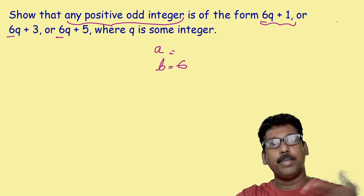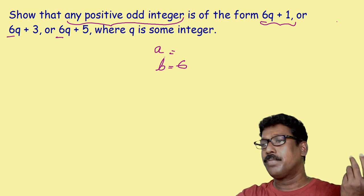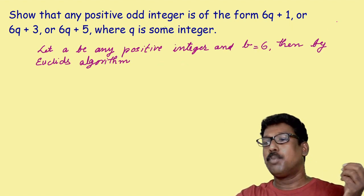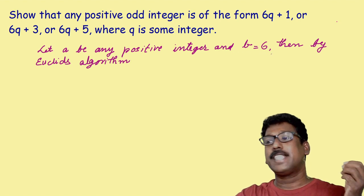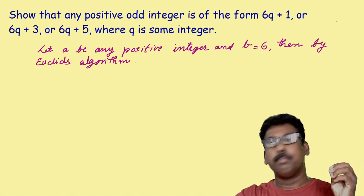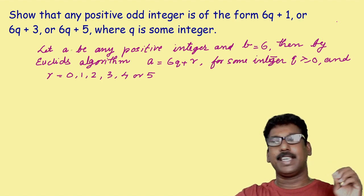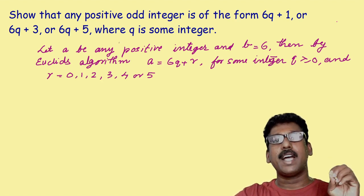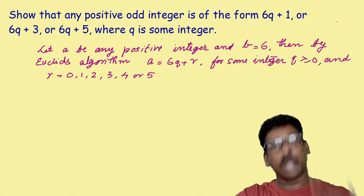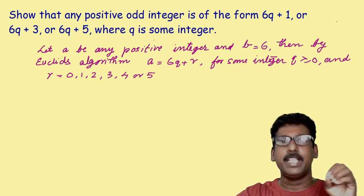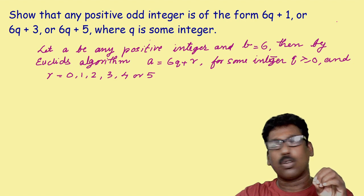And q will always be greater than or equal to 0. So we can write: let a be any positive integer and b equal to 6. Then, by Euclid's division algorithm, a is equal to 6q plus r, for some integer q greater than or equal to 0. The possible values of r will be 0, 1, 2, 3, 4, or 5.